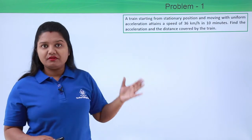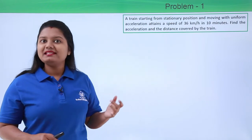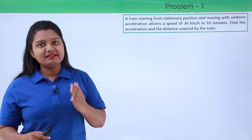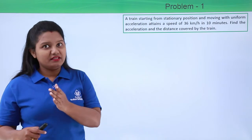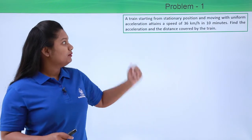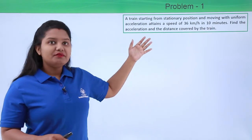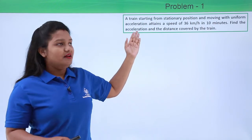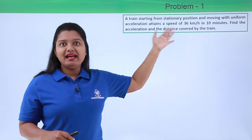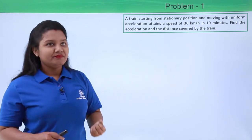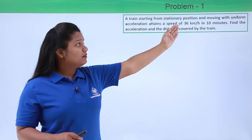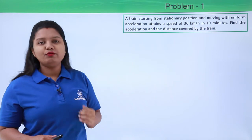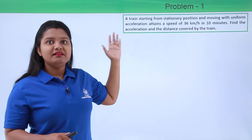The train has started from a stationary position, which means it started from rest to attain a speed of 36 kilometers per hour with uniform acceleration at the end of 10 minutes. Since the train started from a stationary position, its initial velocity can be taken as 0 meters per second.